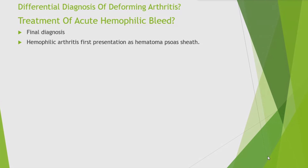Final diagnosis in this case: hemophilic arthritis. The first presentation was a hematoma in the psoas sheath that produced an unpleasant sensation, for which heat was applied and led to burns. Causes of femoral nerve injury include direct injury, tumor, psoas abscess, psoas bleed, pelvic fracture, radiation, retroperitoneal hemorrhage, and femoral catheterization. The localization is the psoas sheath. With this past history and clinical findings, we reach the diagnosis of hemophilia with hemophilic arthropathy and femoral nerve involvement.